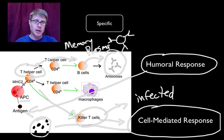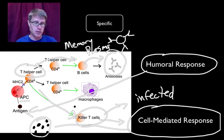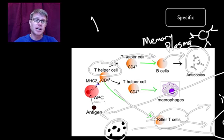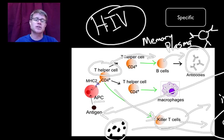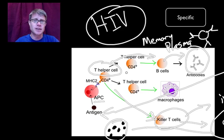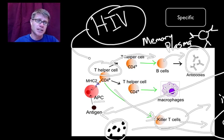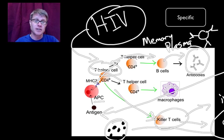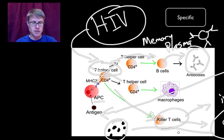If you were to talk about a nasty disease we're fighting across the world right now, that would be HIV — human immunodeficiency virus. What makes HIV really, really nasty is that it's a retrovirus with high mutation rates, but most importantly HIV is actually going to infect helper T cells. By killing helper T cells it stops both the humoral response and the cell-mediated response.